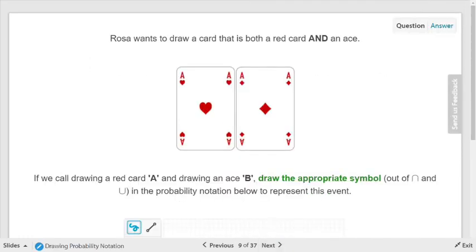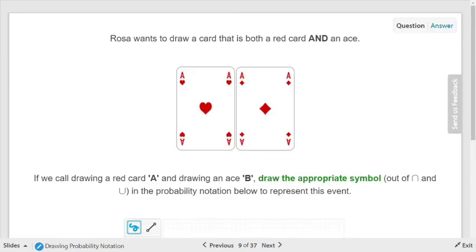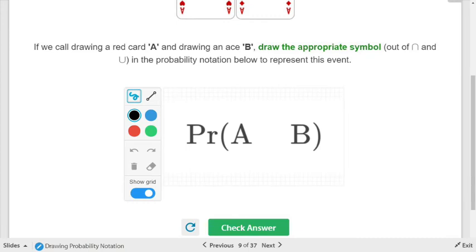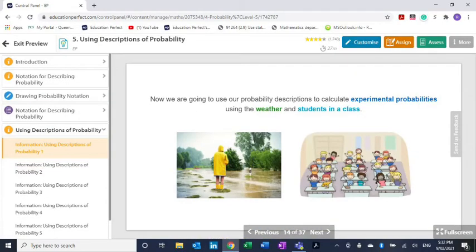Rosa wants to draw a card that's both red and an ace. Remember that if calling red card A and drawing an ace B, draw the appropriate symbol out of union or intersection. Well, she wants to draw a card that has and, and is always intersection. So A intersect B. You're going to be doing some exercises like that.